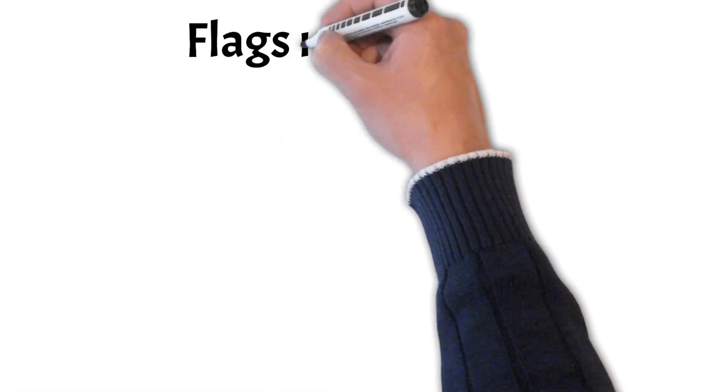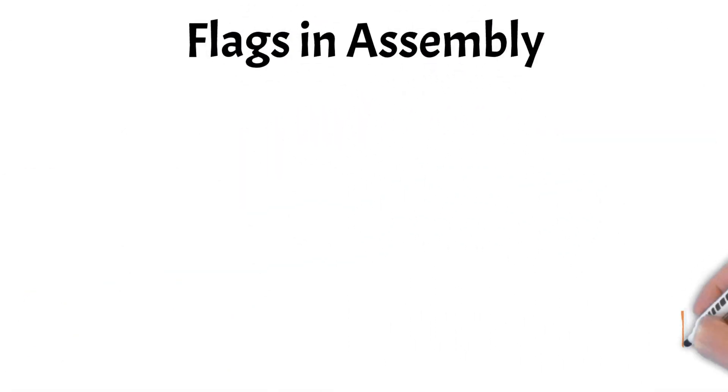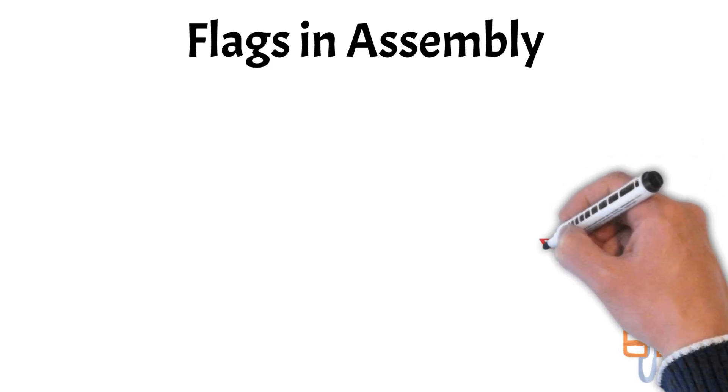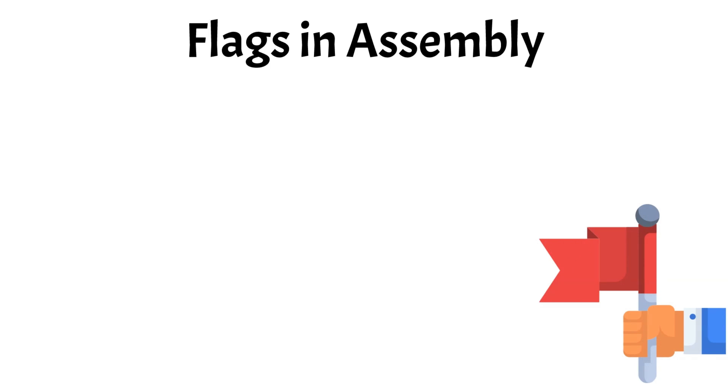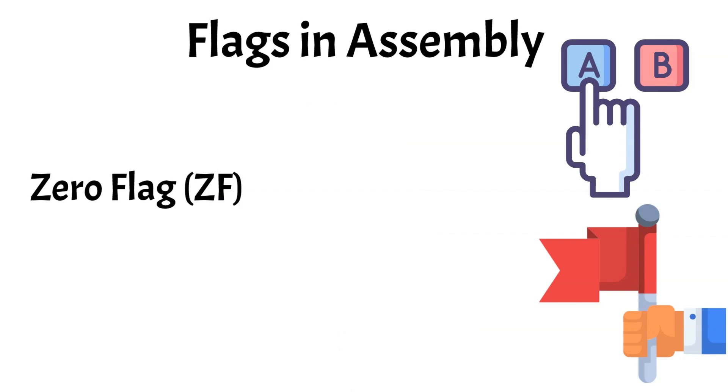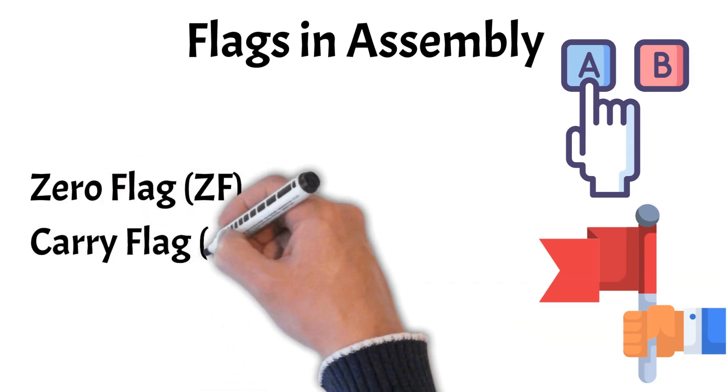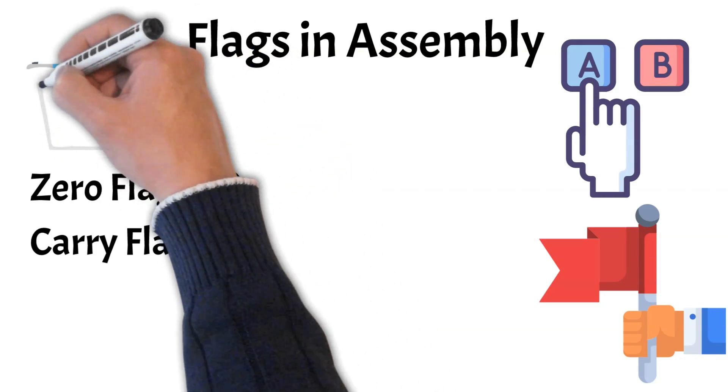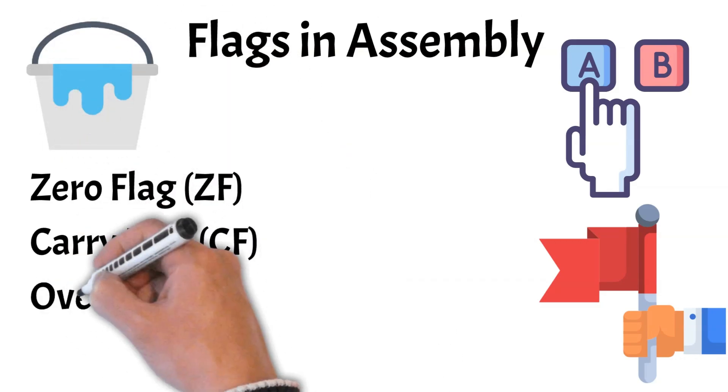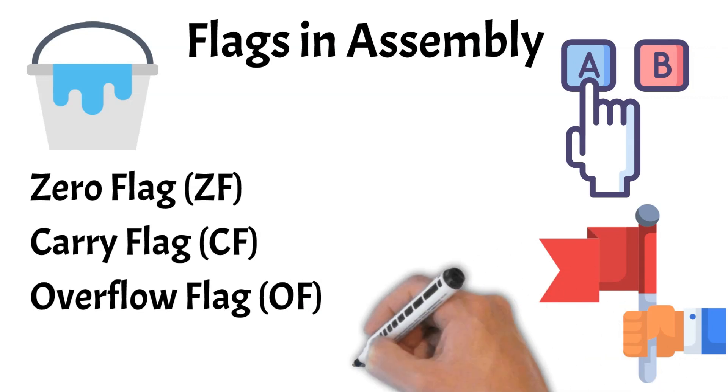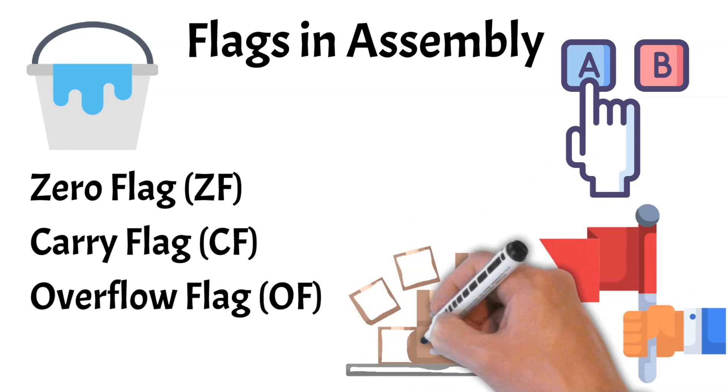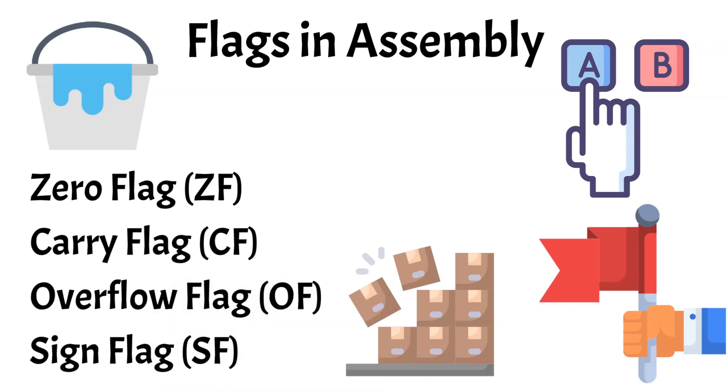Now, let's briefly discuss flags in assembly. Flags are special bits in the CPU that store the results of operations and help control the flow of a program. These status flags are updated automatically based on the outcome of instructions and are used to make decisions during execution. For example, the zero flag is set when the result of an operation is zero, while the carry flag is set if an arithmetic operation produces a result too large for the register to hold. The overflow flag tracks whether an arithmetic operation results in an overflow, and the sign flag indicates whether the result is negative.